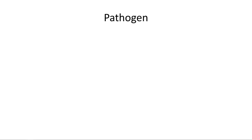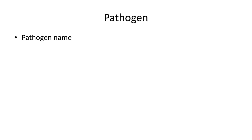Everybody is going to be given pathogen names and what you do is you research the pathogen name. You type it into Google or something like that and go out and find information on it. Some of these you can find information at the National Institutes of Health or the Center for Disease Control. You can also find things at Wikipedia online — there are a lot of different formats in there.